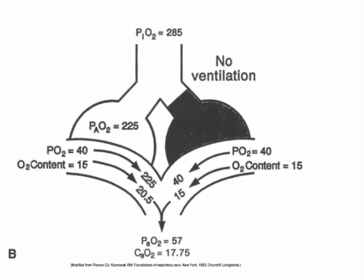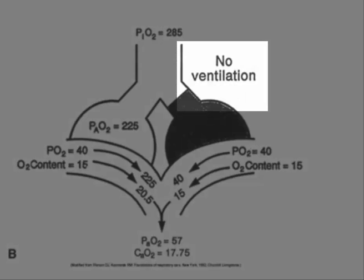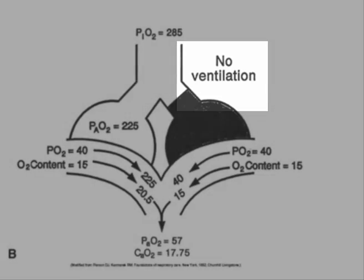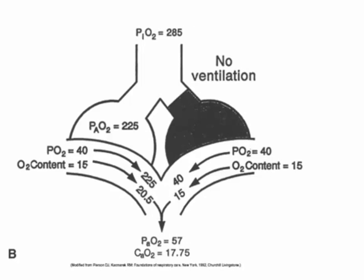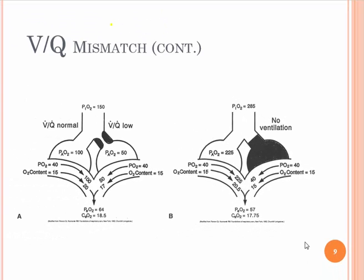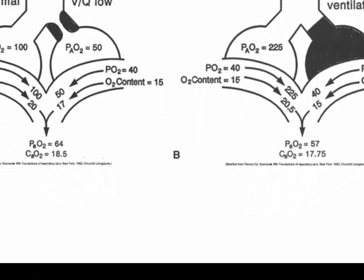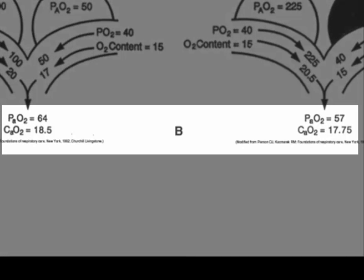On the other side, the big changes are: the inhaled pressure is now PIO2 of 285, but there's no ventilation on one side. So even though you get an alveolar tension of 225, when you mix these two together — because if there's no ventilation, there's no gas exchange in that area — the arterial tension becomes 57 and the arterial content is 17.75. Just by increasing the PIO2 from 150 to 285, in this representation, the 285 actually gets less oxygen into the blood than the PIO2 of 150.